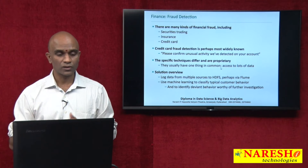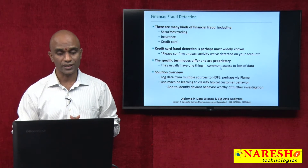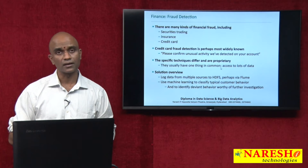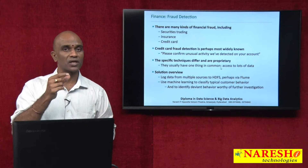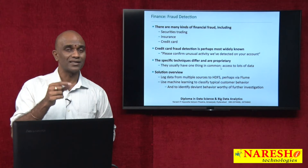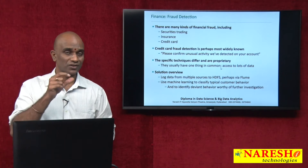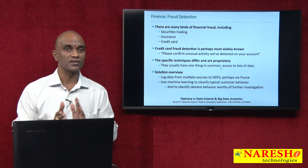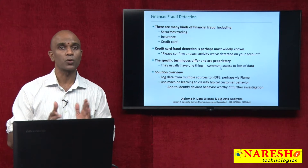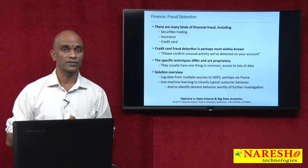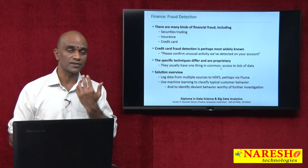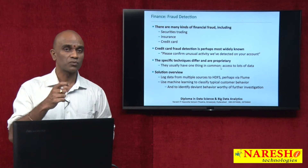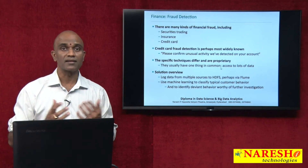The solution is to get all the data — structured data and unstructured data such as log data — and plug it into something called HDFS via Flume or maybe Kafka. Then use machine learning techniques and predictive modeling algorithms to identify the unusual patterns. It's not possible to manually code business rules because there will be millions of permutations and combinations if we were to write them using a programming language such as Java or .NET.